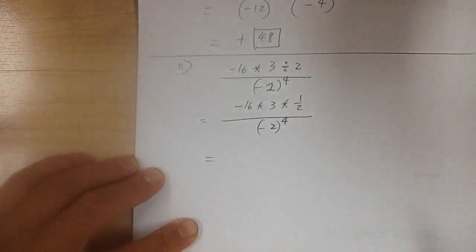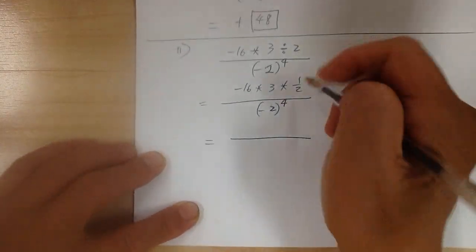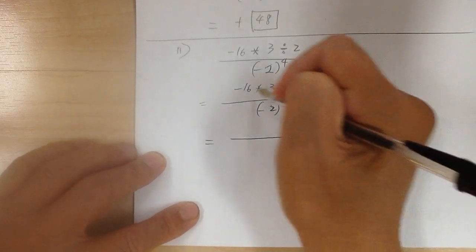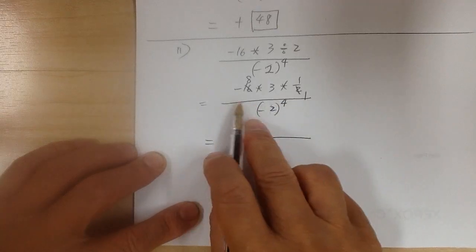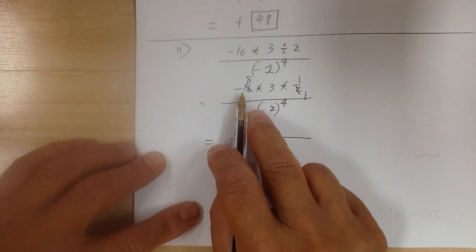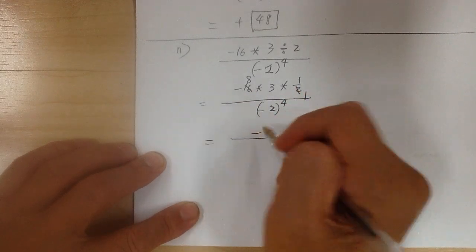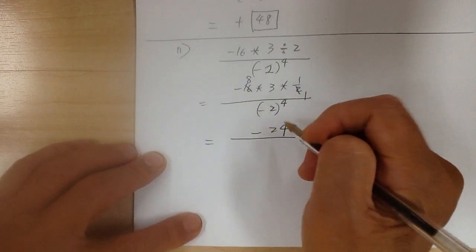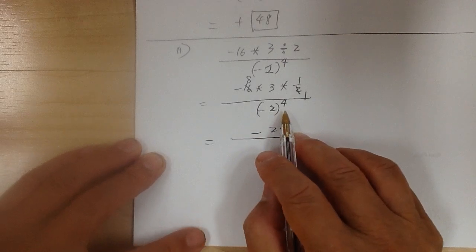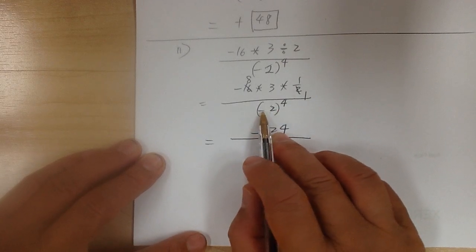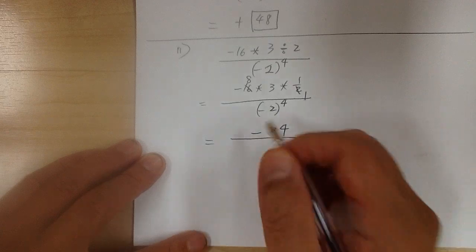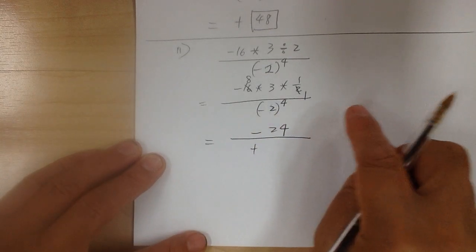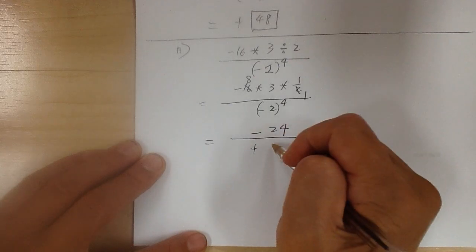Now we can work it out. Notice 16 and 2 can reduce by 2 — divide by 2, you get 1; divide by 2, you get 8. So when you do multiplication, first take care of the sign: negative times positive times positive gives you negative. The number: 8 times 3 gives you 24. On the bottom, this is the 4th power, so you're going to get 4 negatives — negative, negative, negative, negative will give you positive. And 2 to the 4th would be 2 times 2 times 2 times 2, which gives you 16.